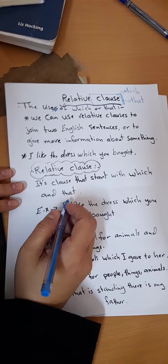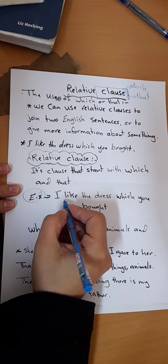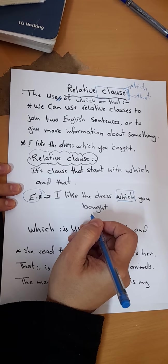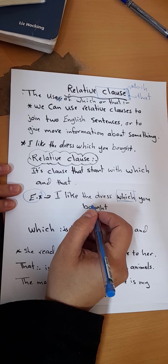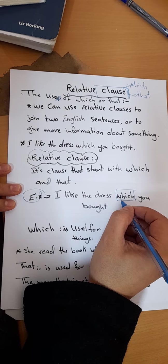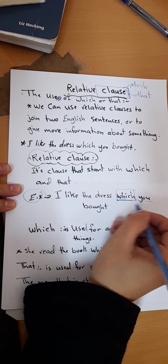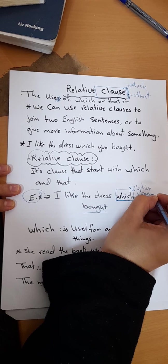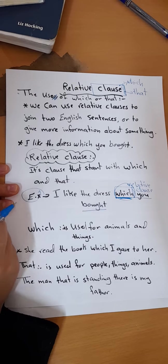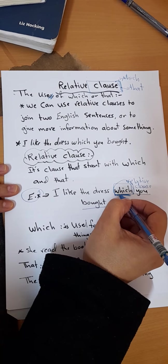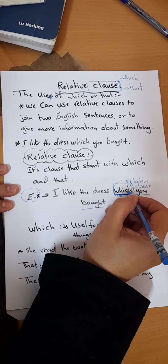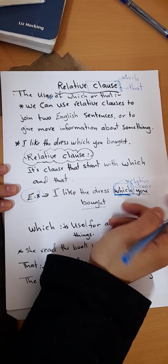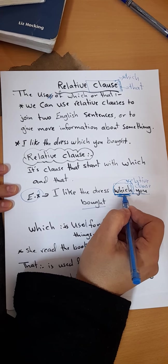Look at this example: 'I like the dress which you wore.' Now here we have a relative clause. Where is the relative clause? It is 'which you wore' — this is the relative clause because it starts with 'which'. So it is a clause that starts with 'which' or 'that'.